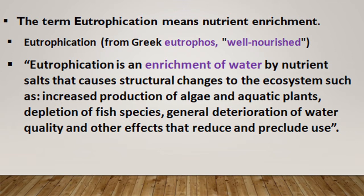Eutrophication is an enrichment of water by nutrient salts that causes structural changes — meaning there will be changes in the composition, appearance, and arrangement of water in the water body — to the ecosystem, such as increased production of algae and aquatic plants, depletion of fish species, general deterioration of water quality, and other effects that reduce and prevent its use.